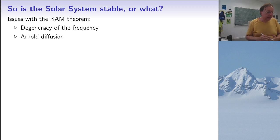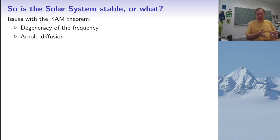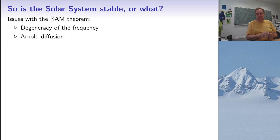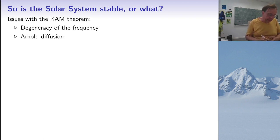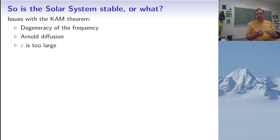A third problem is that ε — roughly the ratio of Jupiter's mass to the Sun's — is not small enough to guarantee the theory works. So what about the stability of the solar system? There has been work over the last 30 years, notably by French mathematician Jacques Laskar, who performed very extensive numerical simulations integrating the motion of the solar system over millions or even billions of years.